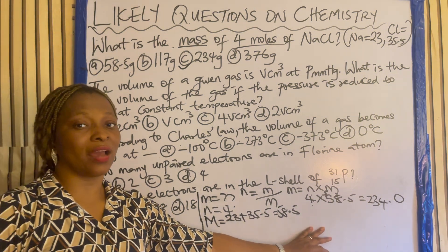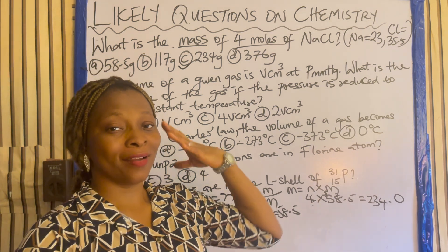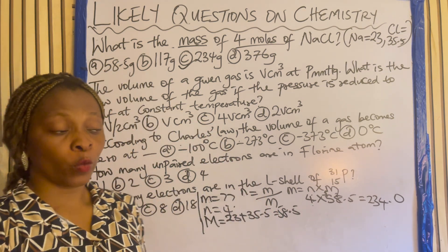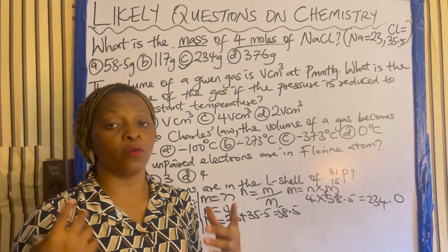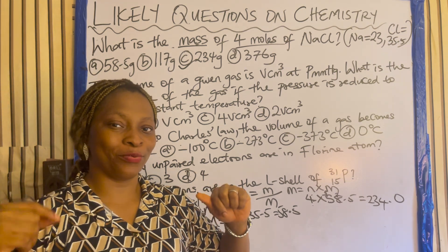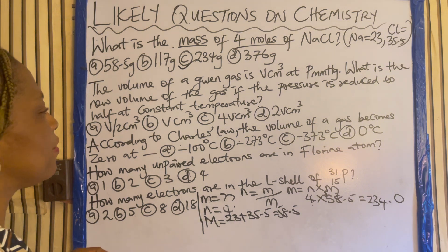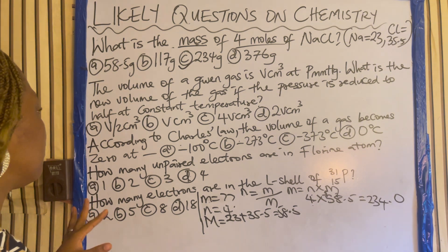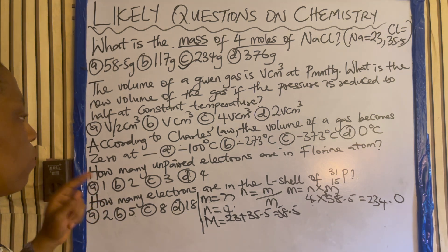You see the way I'm solving without a calculator. You have to learn how to solve without using a calculator by knowing your times tables very well. If you want me to make a video on how to use a calculator in your system, please put it in the comment section. The volume of a given gas is V cm³ at P mmHg. What is the new volume of the gas if the pressure is reduced to half at constant temperature?